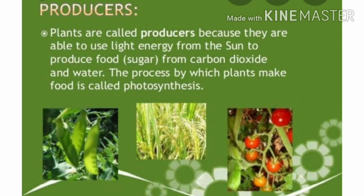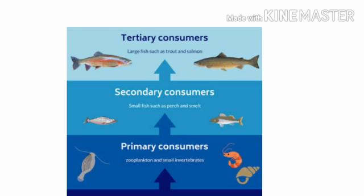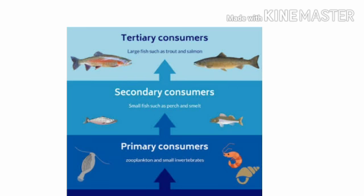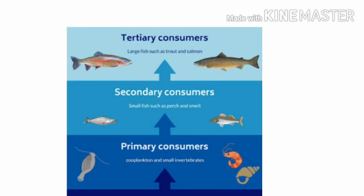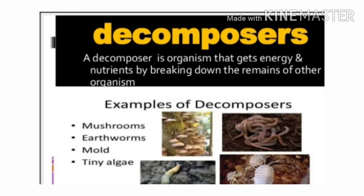Consumers like animals consume the green plants or producers, starting with primary consumers or herbivores. Herbivores are then consumed by secondary consumers or carnivores. There may be tertiary consumers feeding upon secondary consumers. The last link of a food chain ends with decomposers, transformers, or scavengers, which finally release dead organic matter into the air, water, and soil.